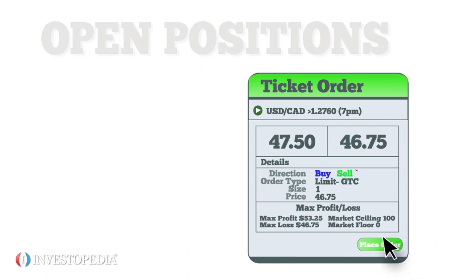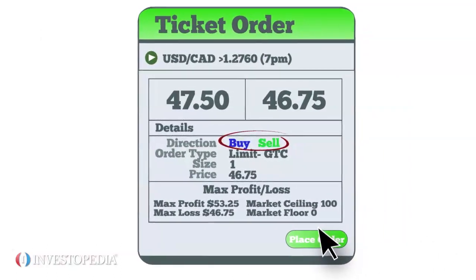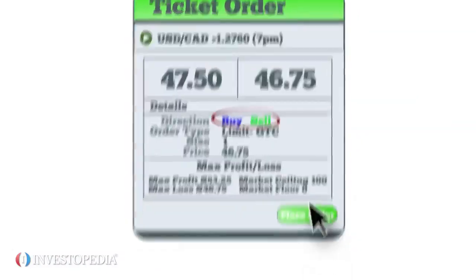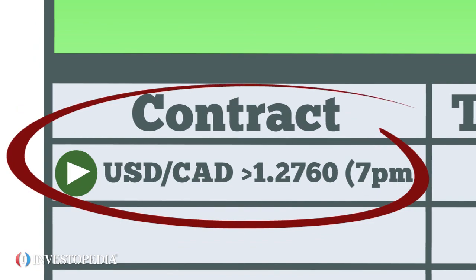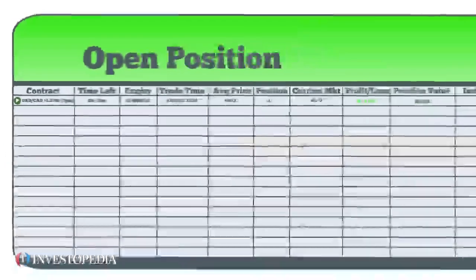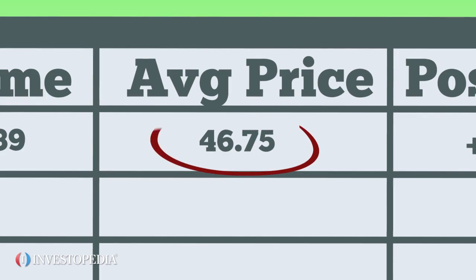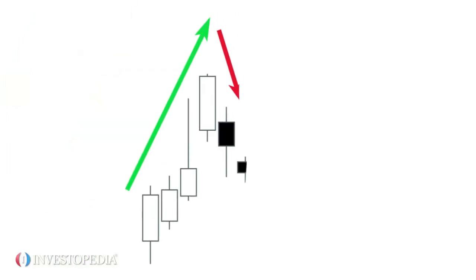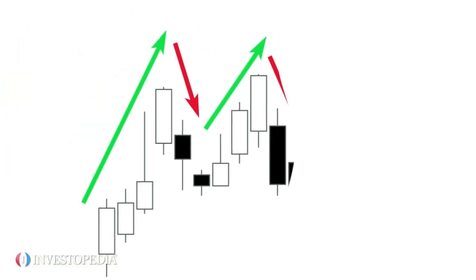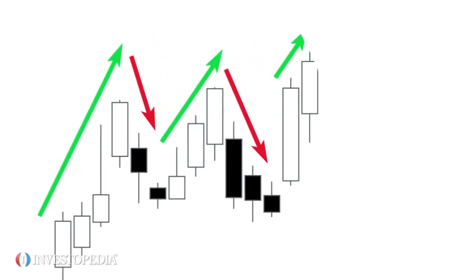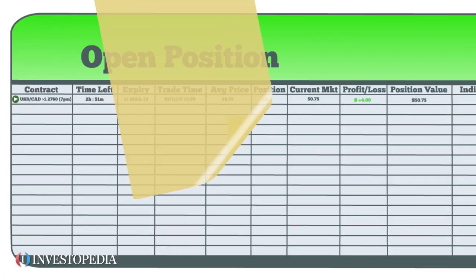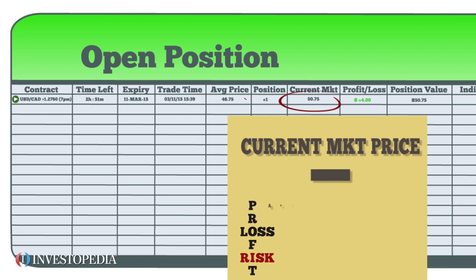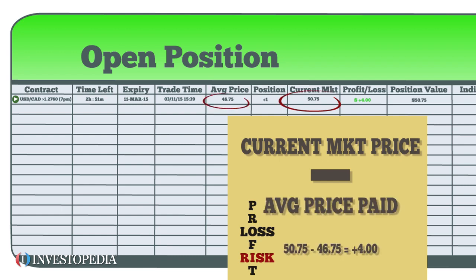After you place an order to buy or sell and another trader takes the other side, you have an open position. In this example, the user bought one binary option on USD/CAD for $46.75. As the underlying market — USD/CAD, the indicative index — moves up and down, the current market price will fluctuate, causing the profit/loss number to change. Your profit or loss is the difference between the current market price of the option and the average price you paid when you entered the trade.